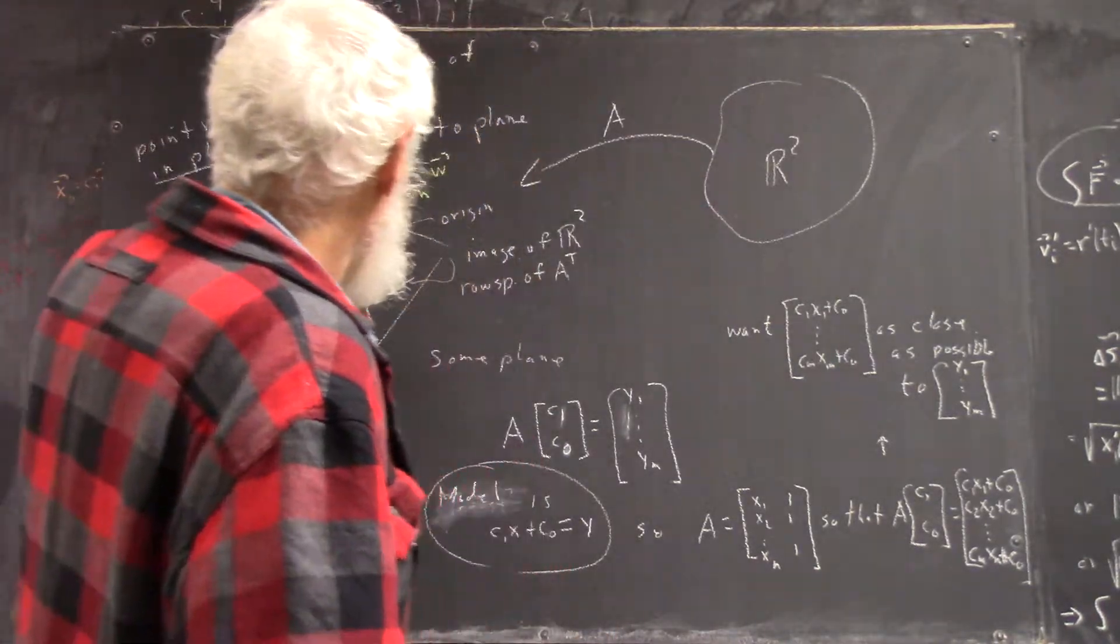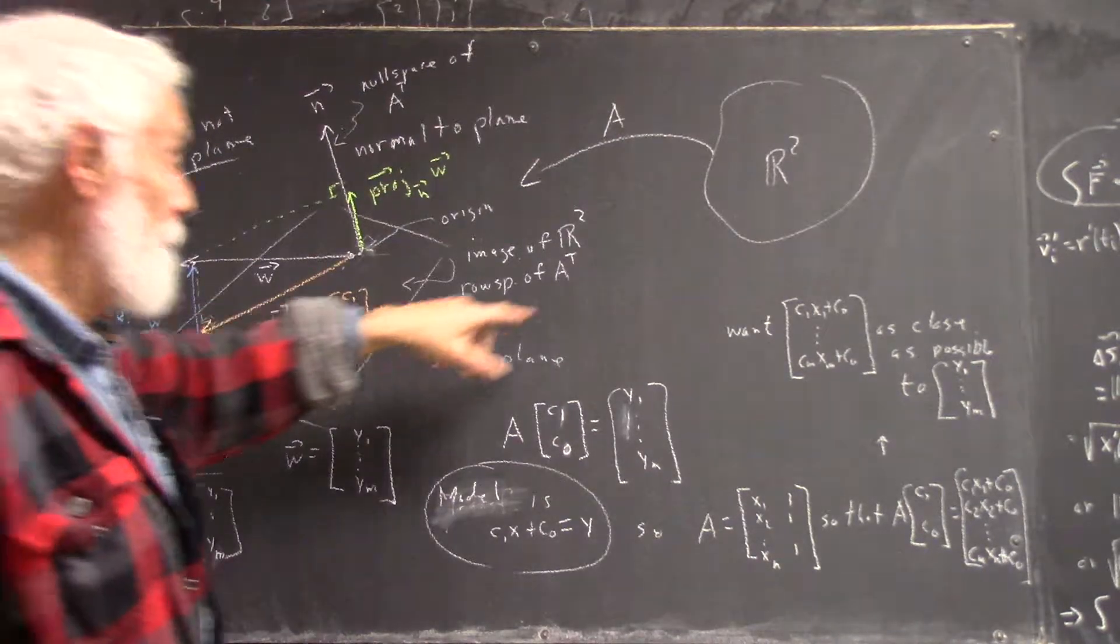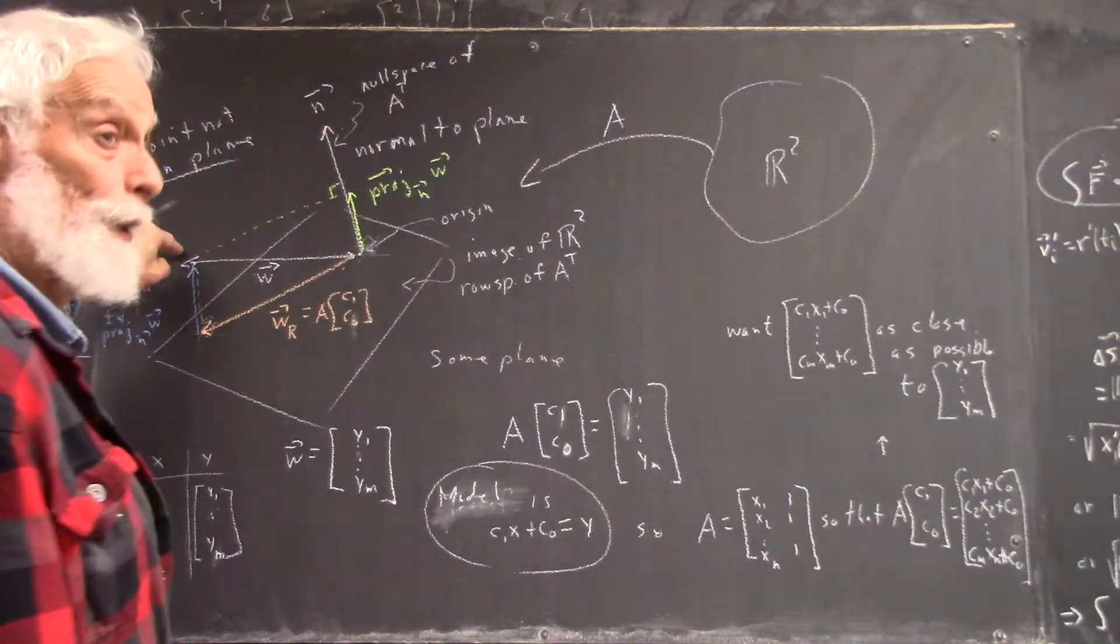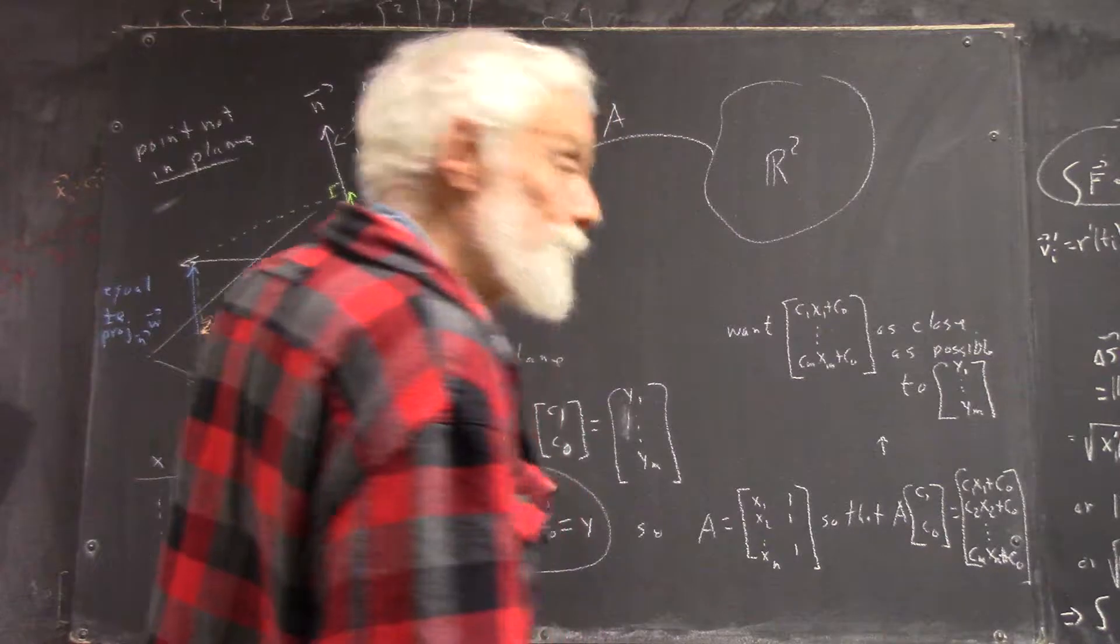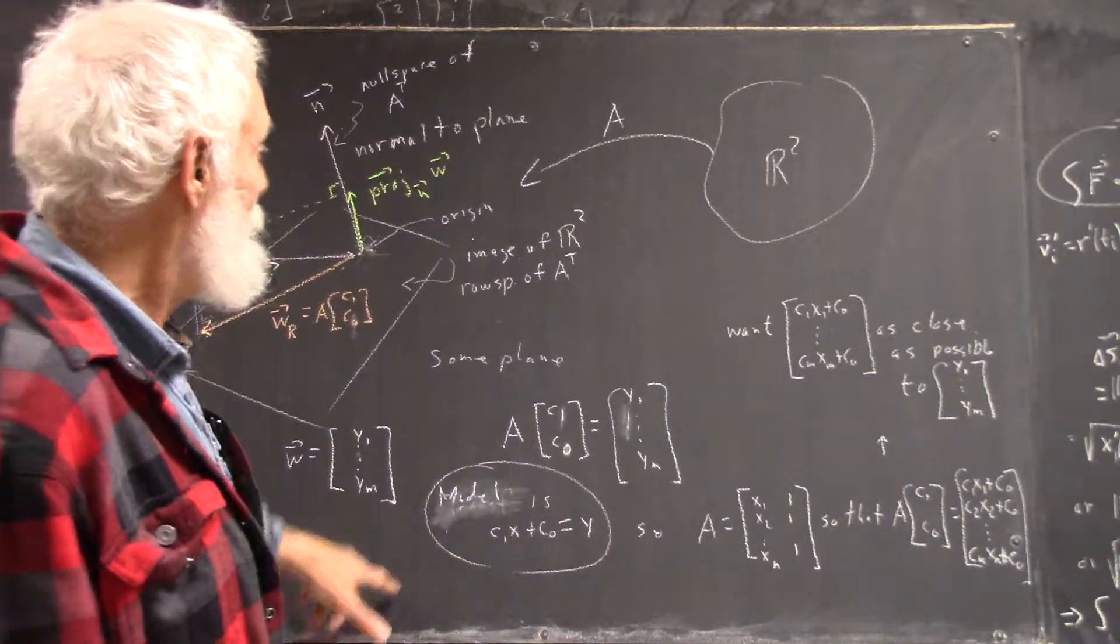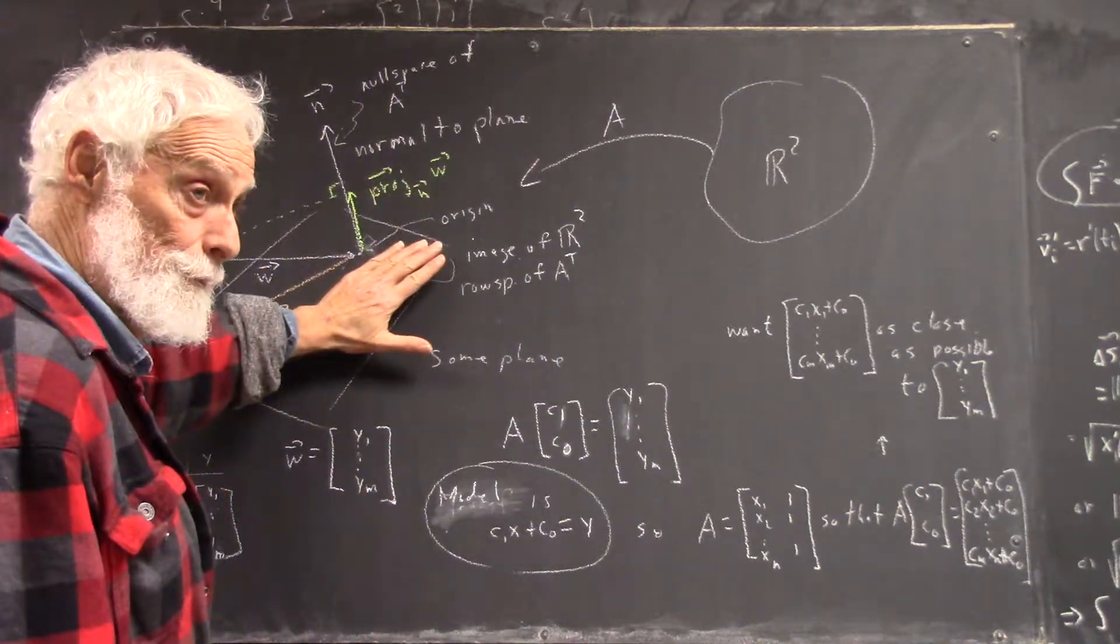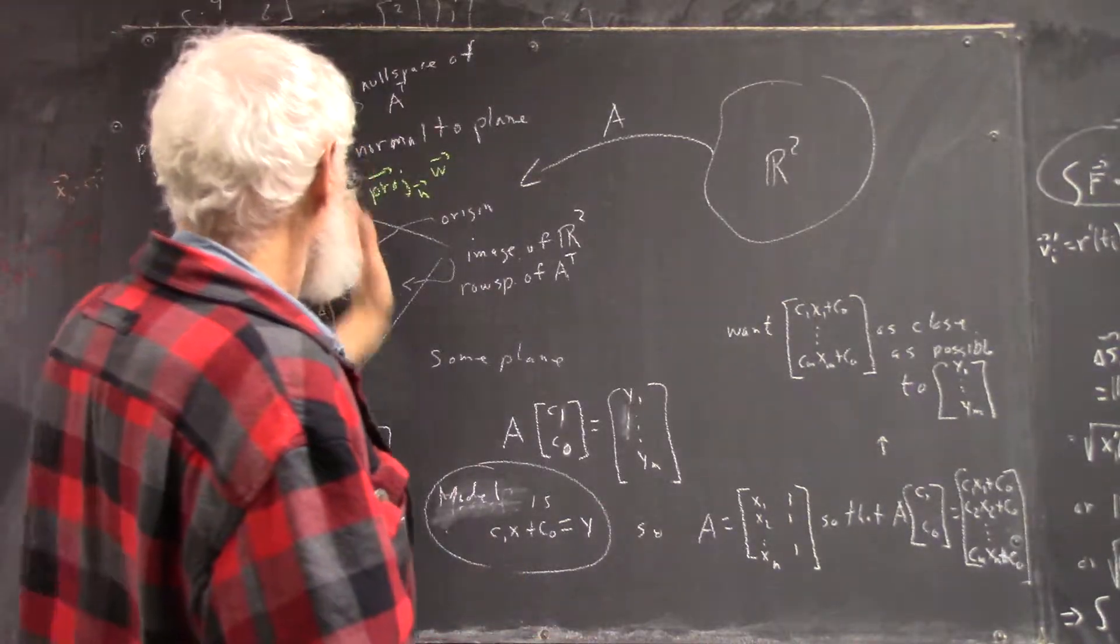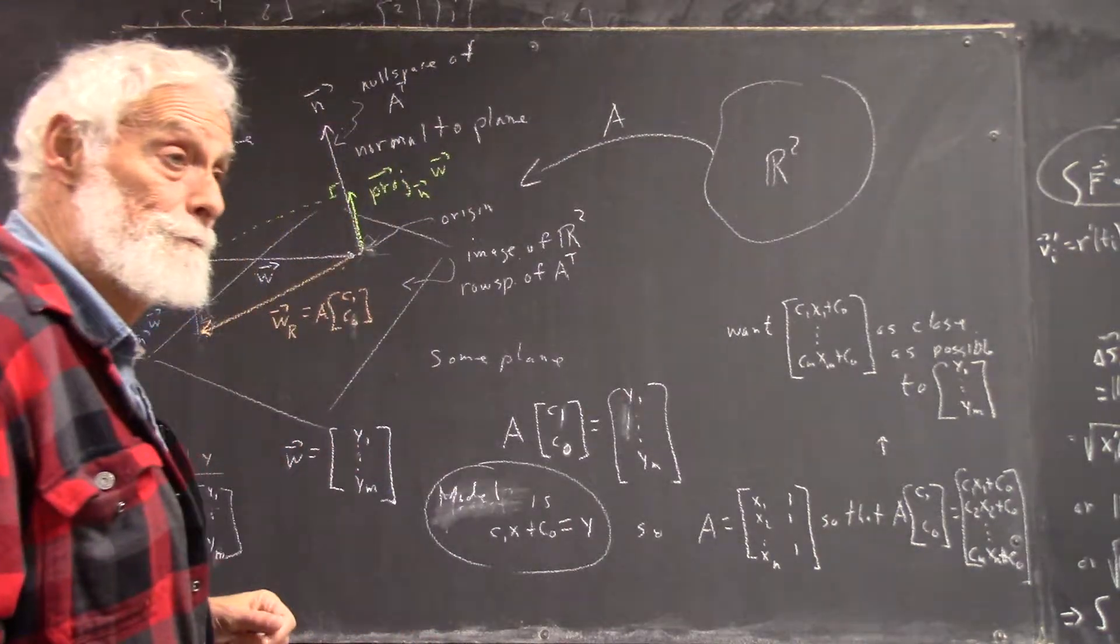So A takes R2 here. It takes some vector to this vector that's as close as possible to this vector. And that's the vector we want, because that's our C1 and C2 that minimizes the squares of the distances. And now we've got the image space, which is this plane, represented by this plane in general. And we have a null space that I represent by the line defined by this vector.